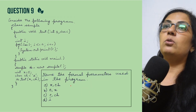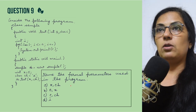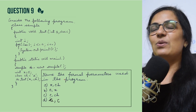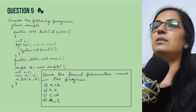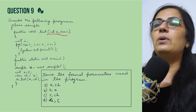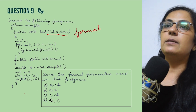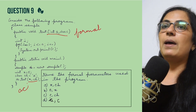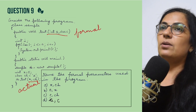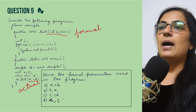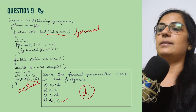Please watch the user defined functions video — all parts — then you won't have any problem solving MCQ questions. Question nine uses the same program but asks: name the formal parameters. Parameters written in the function prototype are termed formal parameters, while parameters in function calling are actual parameters. Don't get confused — many students write the reverse. Here, a and c are the formal parameters, so option B is correct.